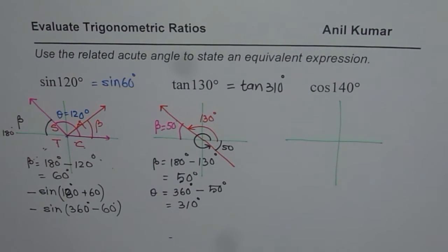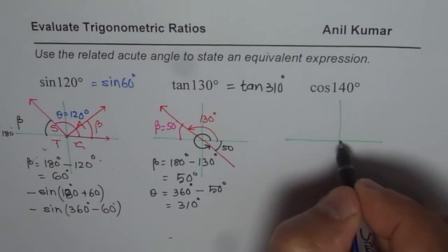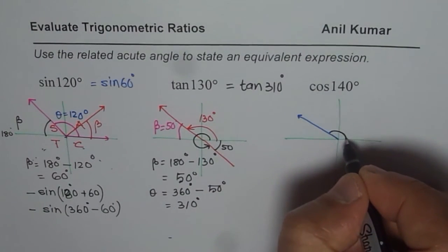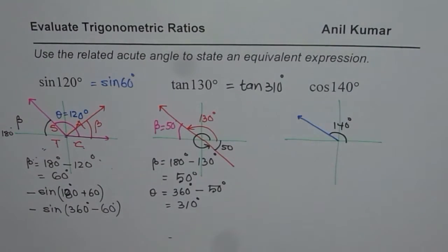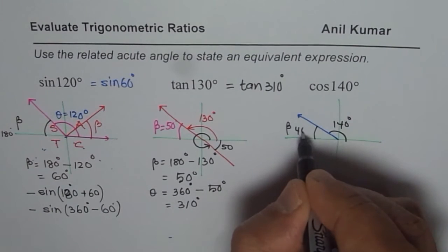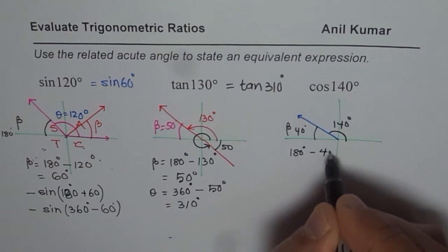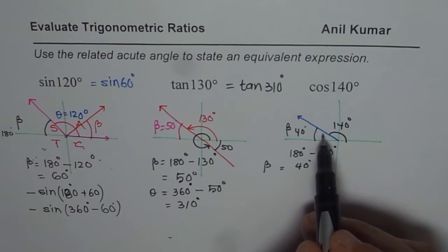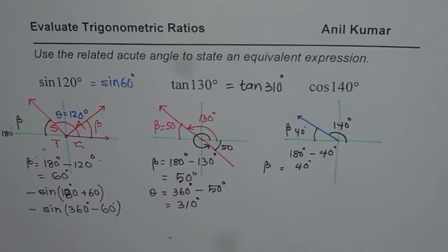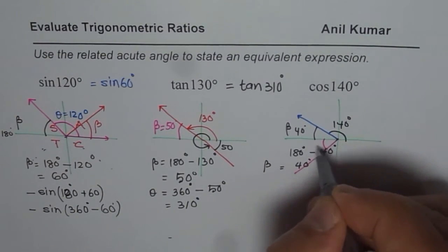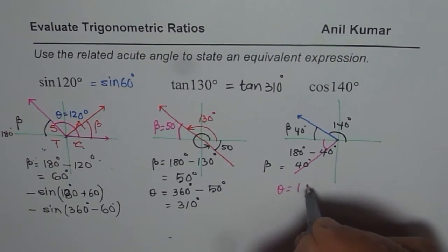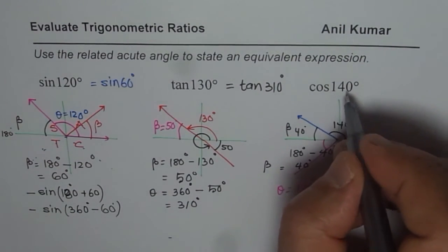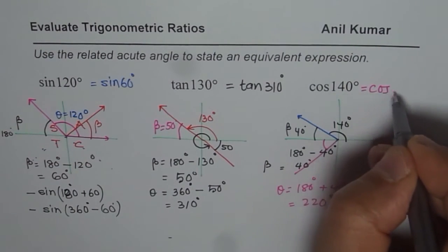The last one is cosine of 140 degrees — again an angle in quadrant 2. If the angle is 140 degrees, the acute angle beta is 180 minus 140, which equals 40 degrees. Cosine is negative in quadrant 2 and quadrant 3. Therefore, the other equivalent angle is 40 degrees more than 180 degrees: theta equals 180 plus 40 equals 220 degrees. So cosine of 140 degrees equals cosine of 220 degrees.